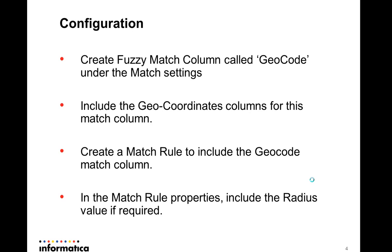To configure this, create a fuzzy match column called geocode under the match settings. Include the geocode with its longitude and latitude for this match column, and create a match rule to include this geocode match column. Once you include the geocode match column, the geocode radius value field will be enabled. Specify that value in meters.